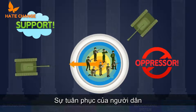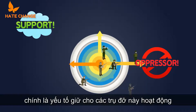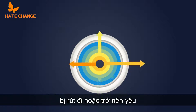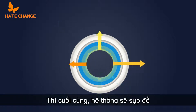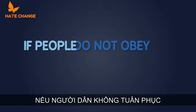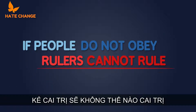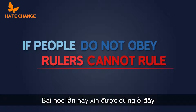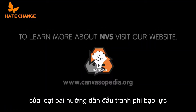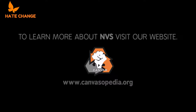The obedience of the people and their willingness to follow orders keep these pillars functional. If the support of these pillars is withdrawn or weakened, eventually the system will collapse. Remember, if people do not obey, rulers cannot rule. Join us for the next episode of our Manual for Nonviolent Struggle, when we'll be talking more about obedience.